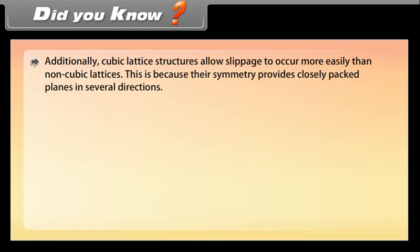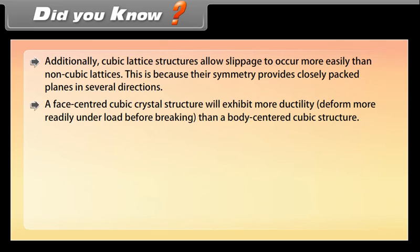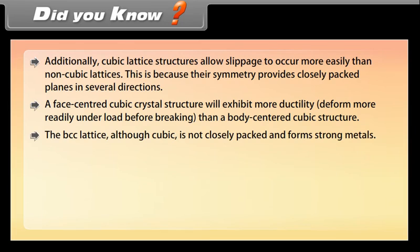Cubic lattice structures allow slippage to occur more easily than non-cubic lattices. This is because their symmetry provides closely packed planes in several directions. A face centered cubic crystal structure will exhibit more ductility, deform more readily under load before breaking than a body centered cubic structure. The BCC lattice, although cubic, is not closely packed and forms strong metals.